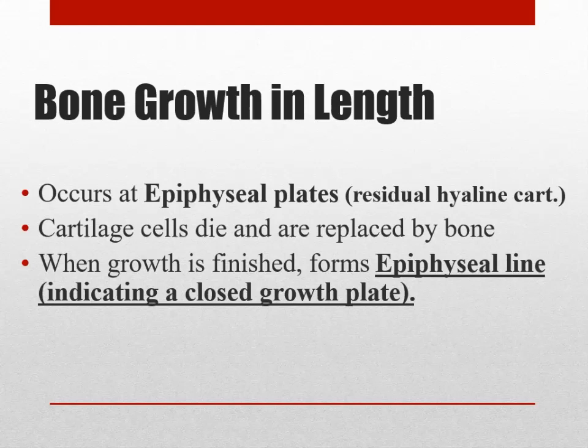Looking at the anatomy of the word synostosis: 'syn' means to come together; 'os' at the root means bone; and 'osis' means condition. So reading it backwards — it's a condition of bone coming together. That's what a synostosis is: any bones that have fused. Any fused bones are called synostosis, which we'll call a bony joint.